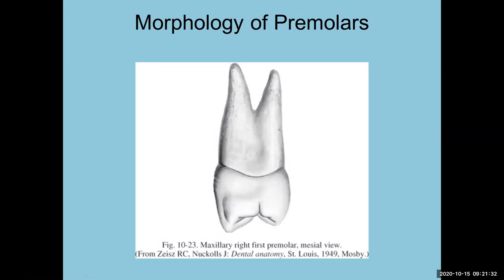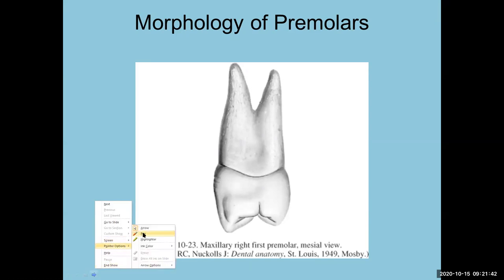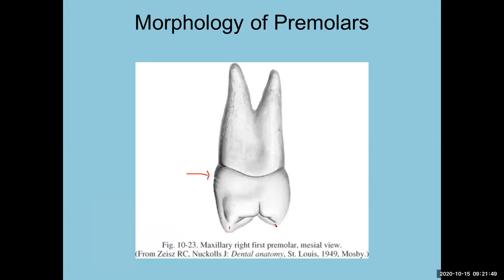Two cusps. The facial cusp is larger. There are two cusps — one and two. Is that a cusp of carabelli? No, there's no cusp of carabelli. Which tooth has a cusp of carabelli? Oh wait, this is a premolar, so never mind.